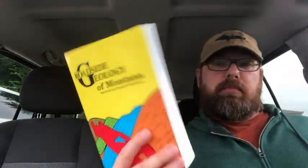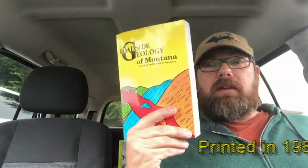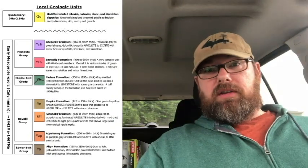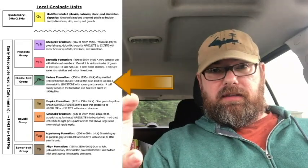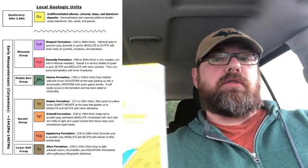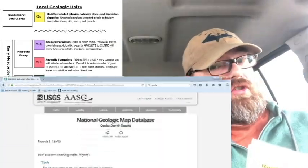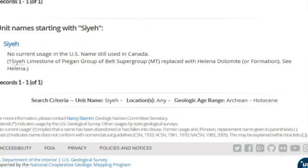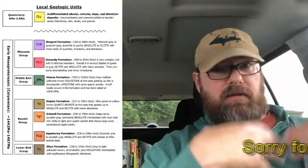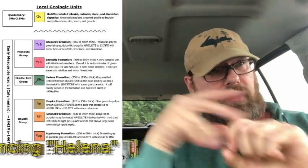I want to talk about this book real quick. I do recommend it, though I have some minor problems with it. The biggest thing that has changed is the stratigraphic column for Going to the Sun Road — here you'll see the Helena Formation, but in this book it's referred to as the Siyeh Formation, which is Canadian nomenclature. We have abandoned that here in the States; the Siyeh is now considered the Helena Formation, part of the Empire Formation.